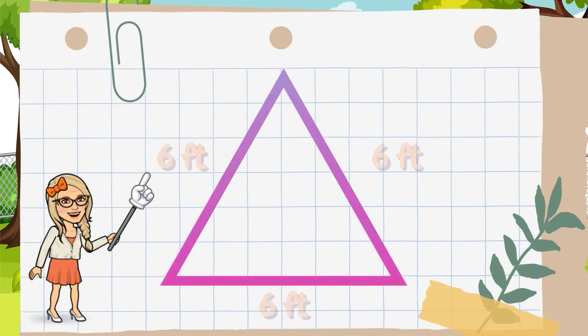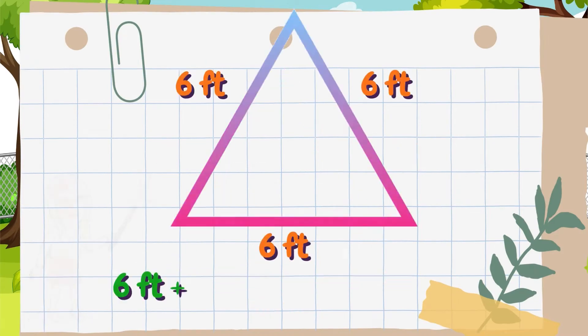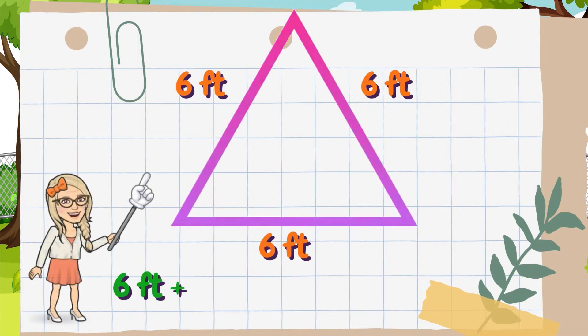Let's find the perimeter of this triangle. Each side of this triangle is 6 feet long. So now, we have to add 6 plus 6 plus 6. In this case, we got a repeated addition sentence. We can add the 6 three times or, as we already know multiplication, we can multiply 6 times 3 and that's equal to 18. So, the perimeter of this triangle is 18 feet.